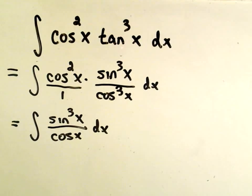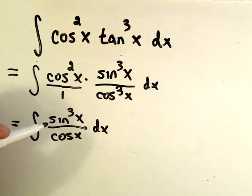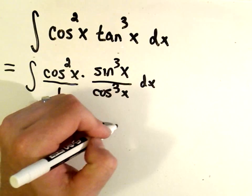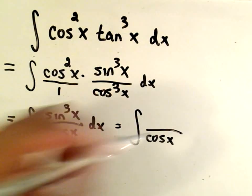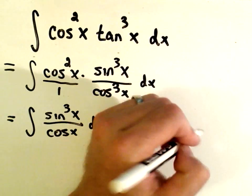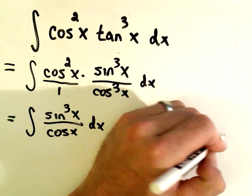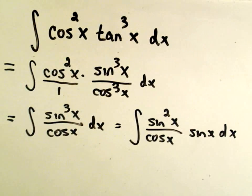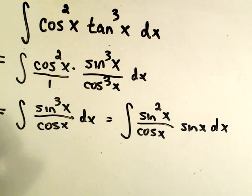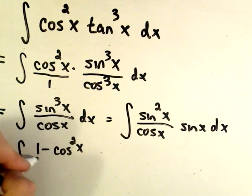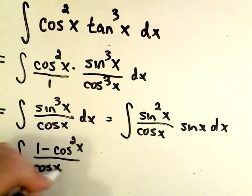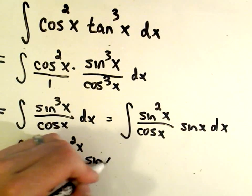And now this is kind of like one of our other cases. Remember, if you had an odd power of sine, you could save that factor. I'm going to leave my cosine in the bottom. I've got sin²x on top. And then I'm going to pull a sin x factor over to the side and just keep him hanging out. And now I'm going to use my trig identity on sin²x. I can write that as 1 - cos²x over cos x times sin x dx.